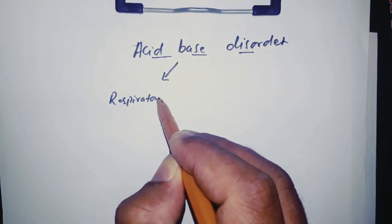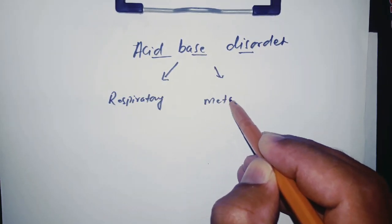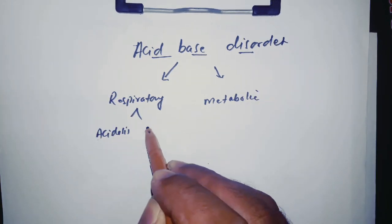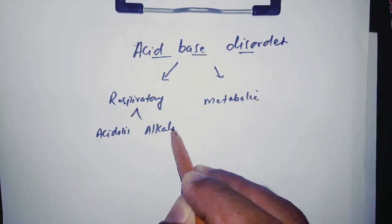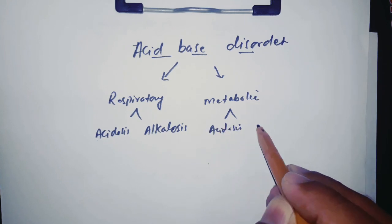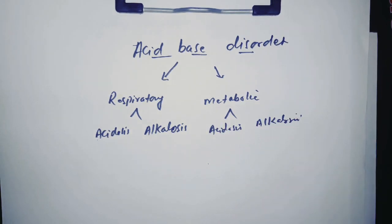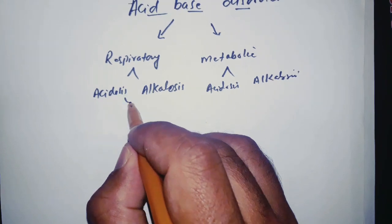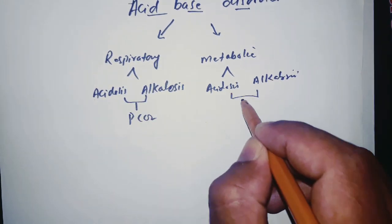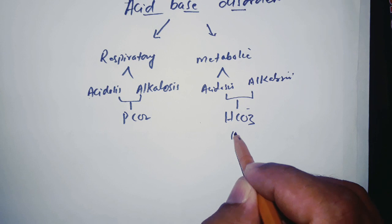An acid-base disorder may be due to respiratory or metabolic causes — respiratory acidosis, respiratory alkalosis, metabolic acidosis, and metabolic alkalosis. Respiratory disorders are due to disturbances in carbon dioxide, and metabolic disorders are due to disturbances in HCO3.